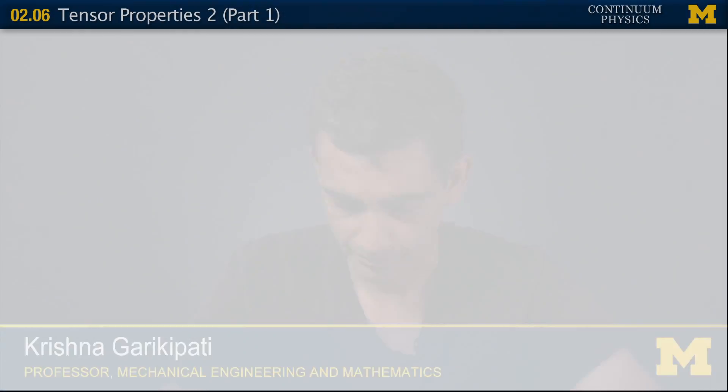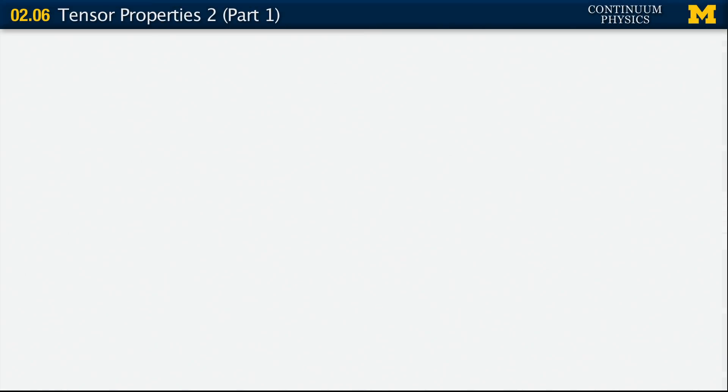We're going to continue studying tensor properties. In this segment, we're going to look at something called the tensor product.